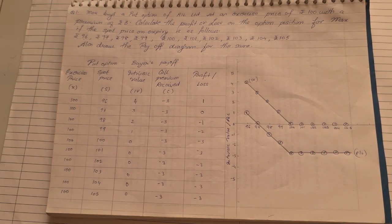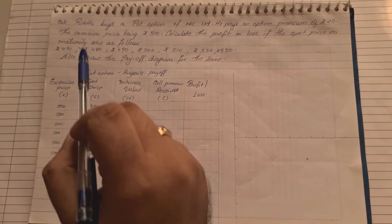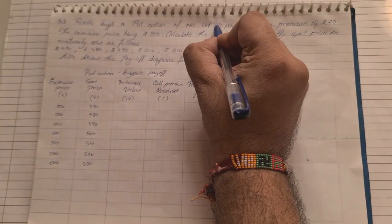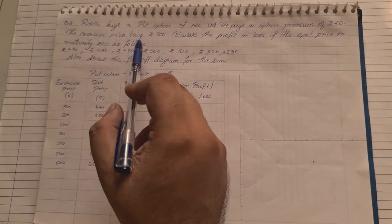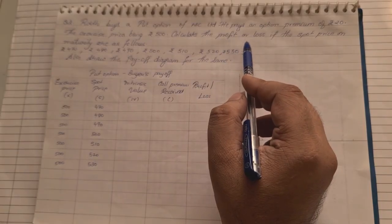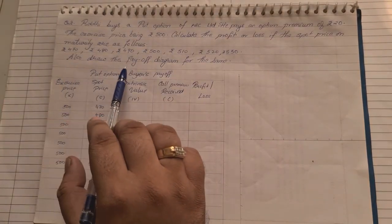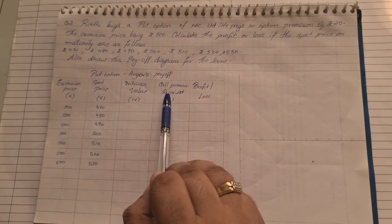That was the first sum based on put option buyer's payoff. Now we take a second sum on the same topic. In this sum, we are buying a put option of ABC Limited. She pays an option premium of rupees 20, with an exercise price of rupees 500. We need to calculate the profit and loss for various spot prices on maturity and also draw the payoff diagram.